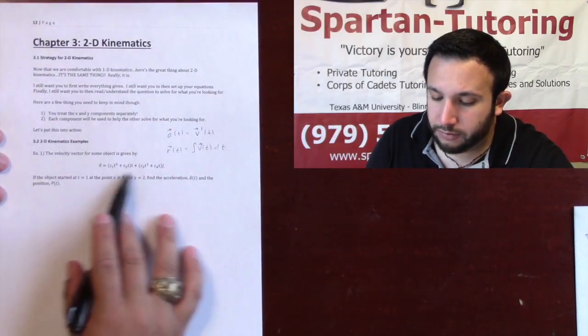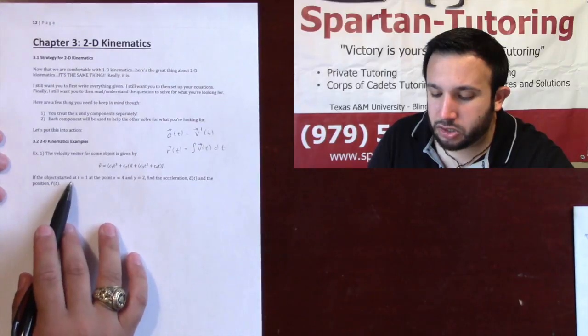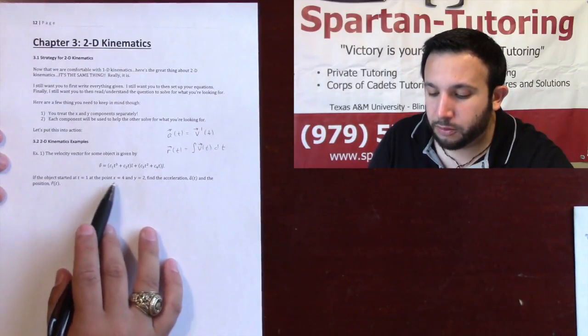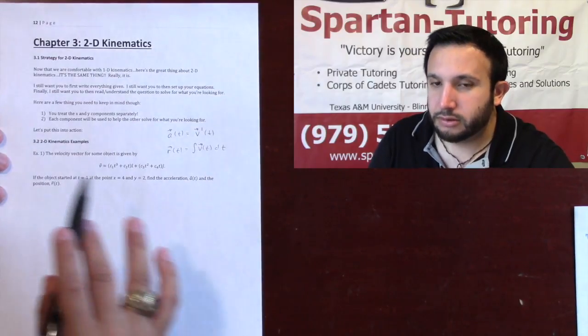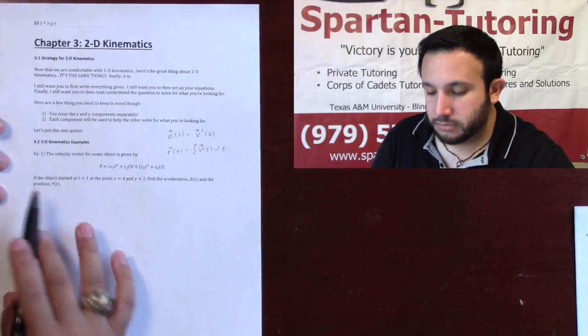We'll get there in just a sec. So if you're given a velocity vector and the object started at t equals 1 at the point x equals 4, y equals 2, find acceleration and position. So let's do it.